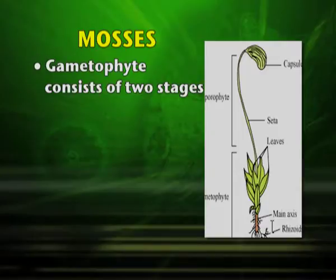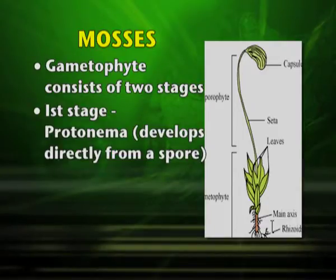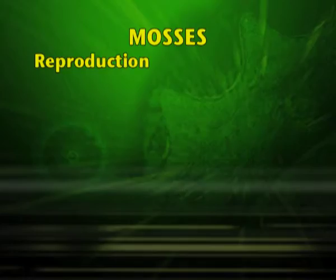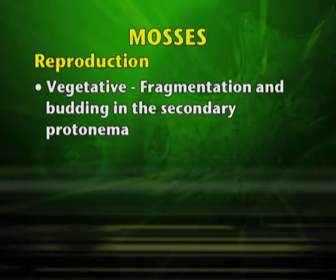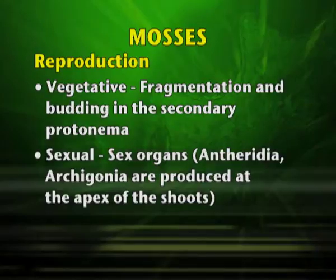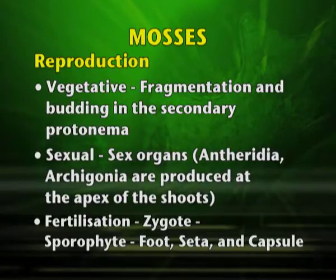In mosses, the gametophyte consists of two stages. The first stage is a protonema which develops directly from the spore. The second stage is the leafy stage which develops from secondary protonema as a lateral bud. Reproduction may be by vegetative means, generally by fragmentation and budding. In sexual reproduction, the antheridia is the male sex organ and archegonia is the female sex organ; they are produced at the apex of the shoots. After fertilization, the zygote develops into the sporophyte, which then forms foot, seta, and capsule.